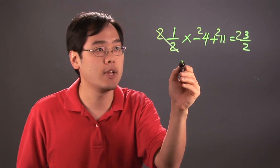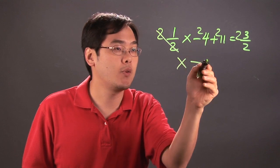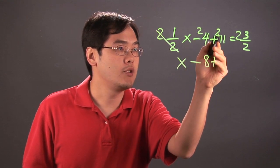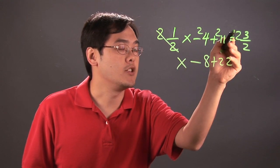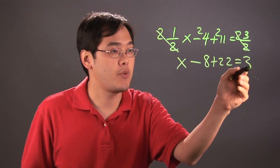So the 2s here cancel, you're left with x minus, you have 2 times 4 is 8, plus 2 times 11 is 22, and then 2 times 3 halves, the 2s cancel, so you're left with 3.